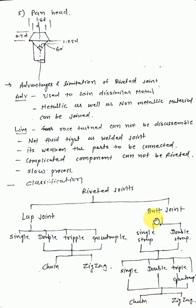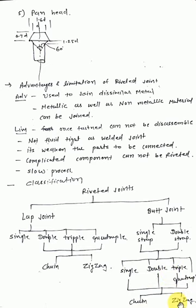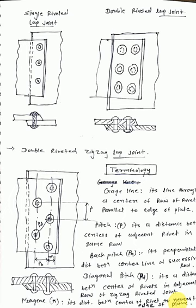The butt joint has single strap and double strap varieties. 'Strap' means the cover plate — if there is one cover plate it is a single strap, and if there are two cover plates it is a double strap. Let me go through them one by one.